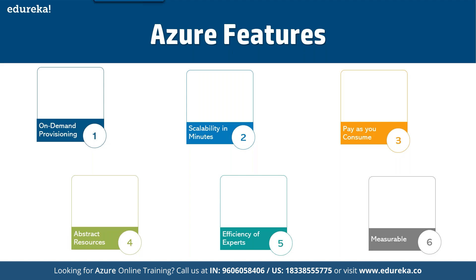For example, if I build a virtual machine with Windows Server 2019 and allocate 2 GB of RAM, and later realize that's too little, I can increase it to 8 GB. You can scale up or scale down the resource depending on your requirement.